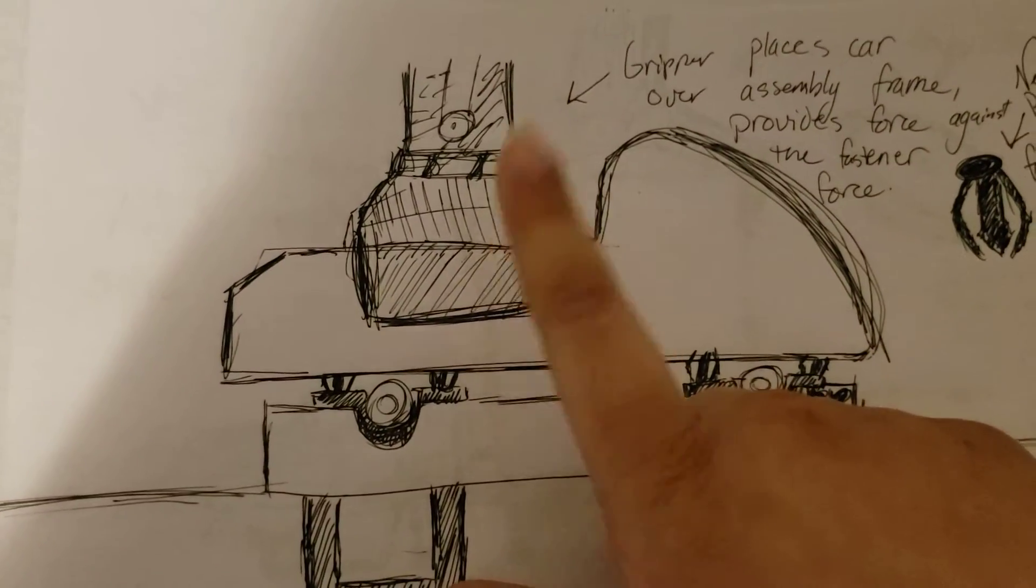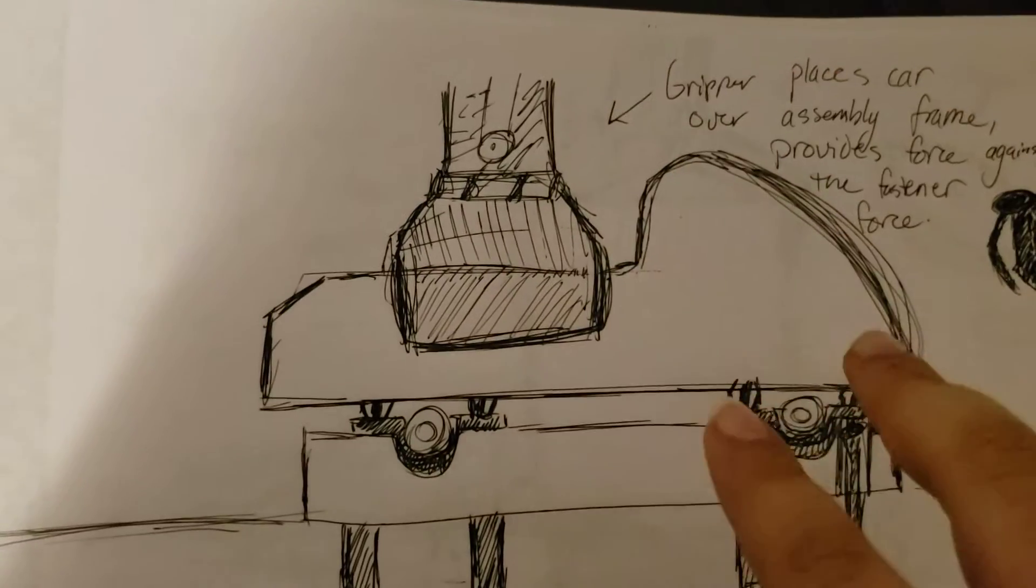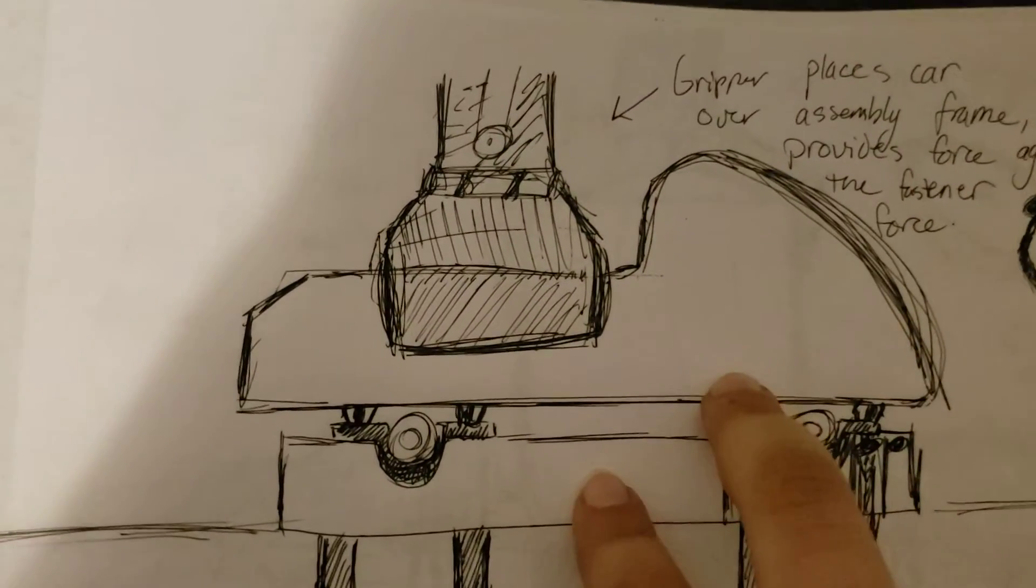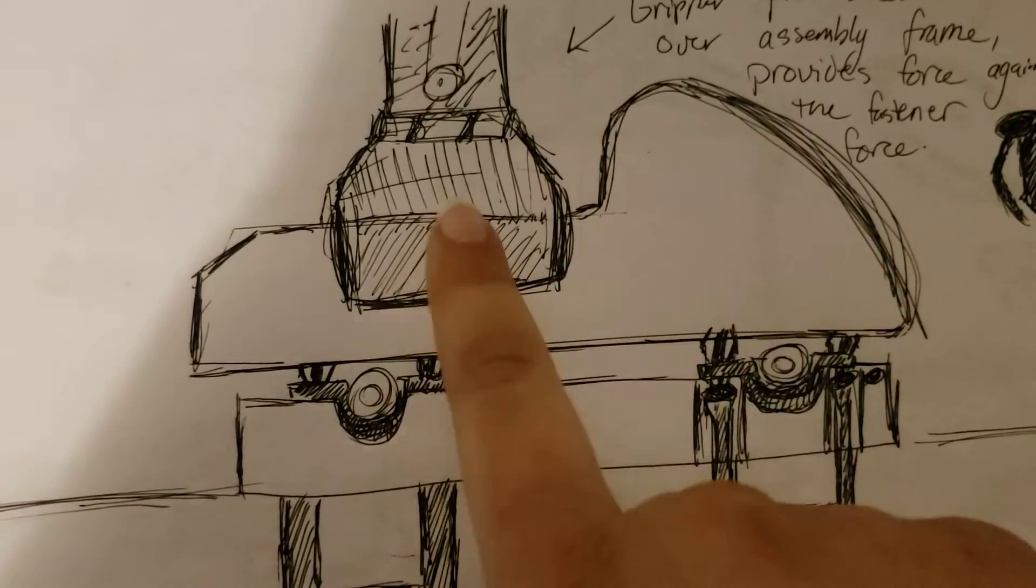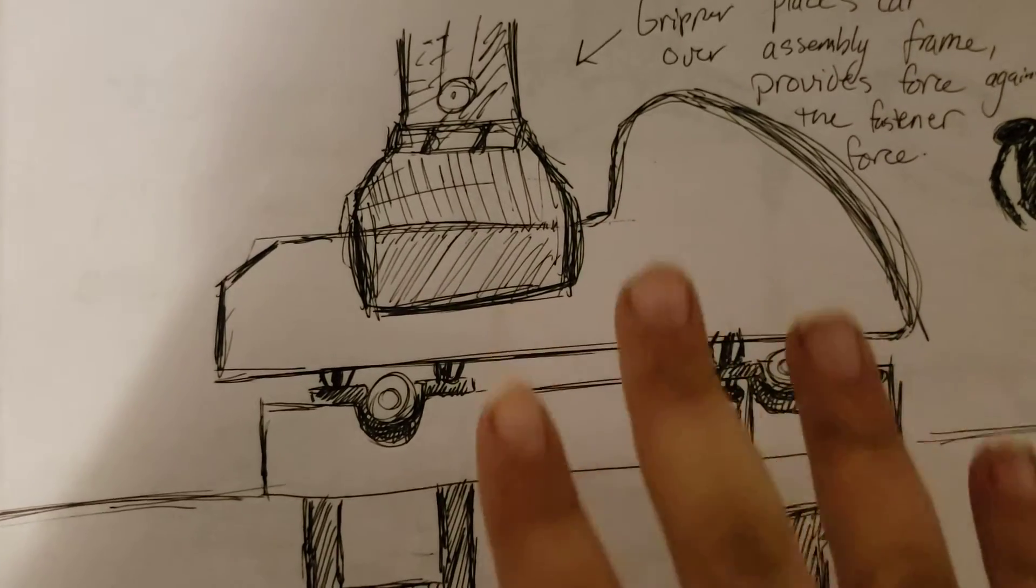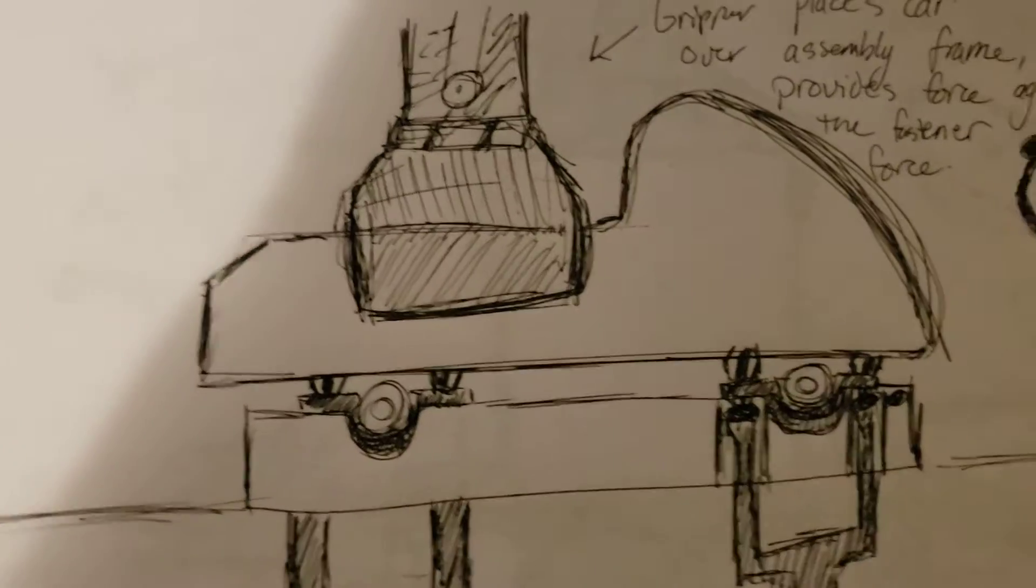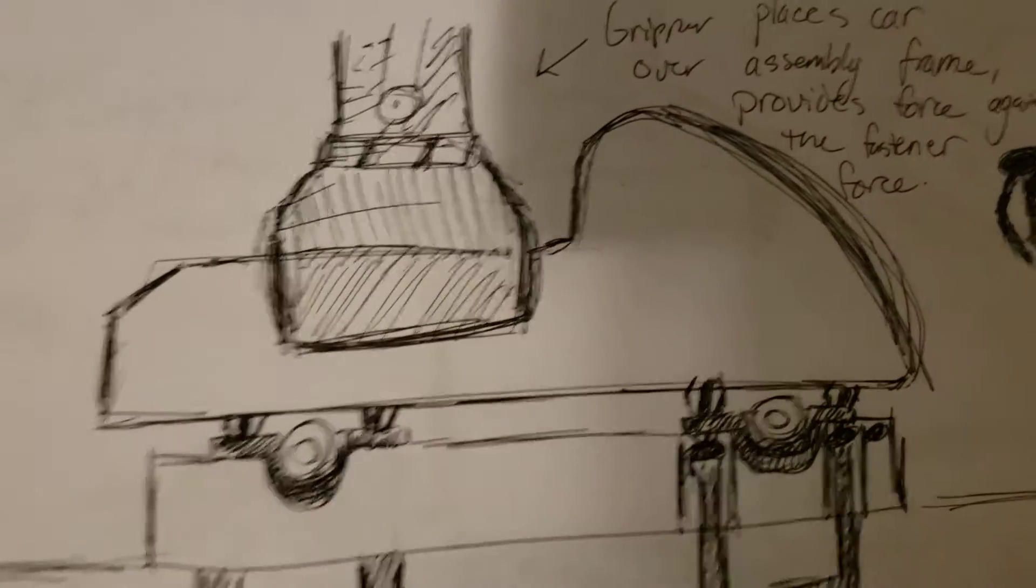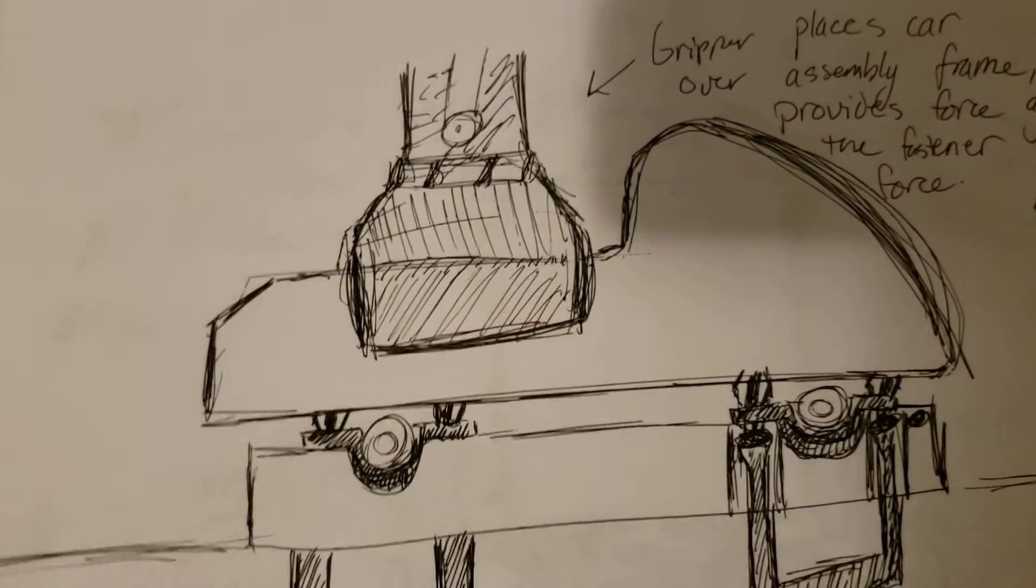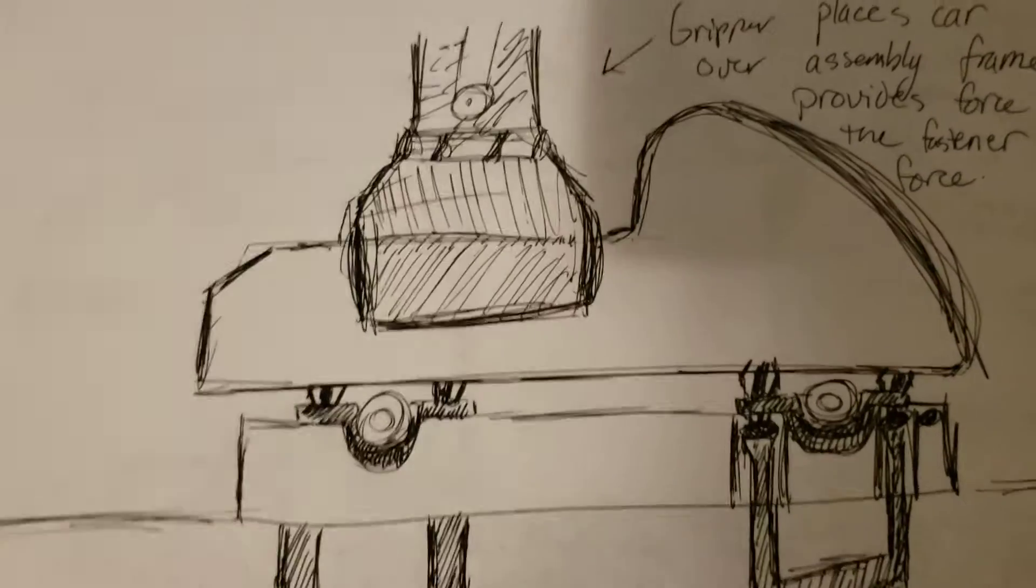Now, this is serving two functions. One, it aligns the car body, it drops it down, and it holds it in place for this operation. And two, it counteracts the pushing force of these pins so that it can stay in place and allow the axles to be installed.